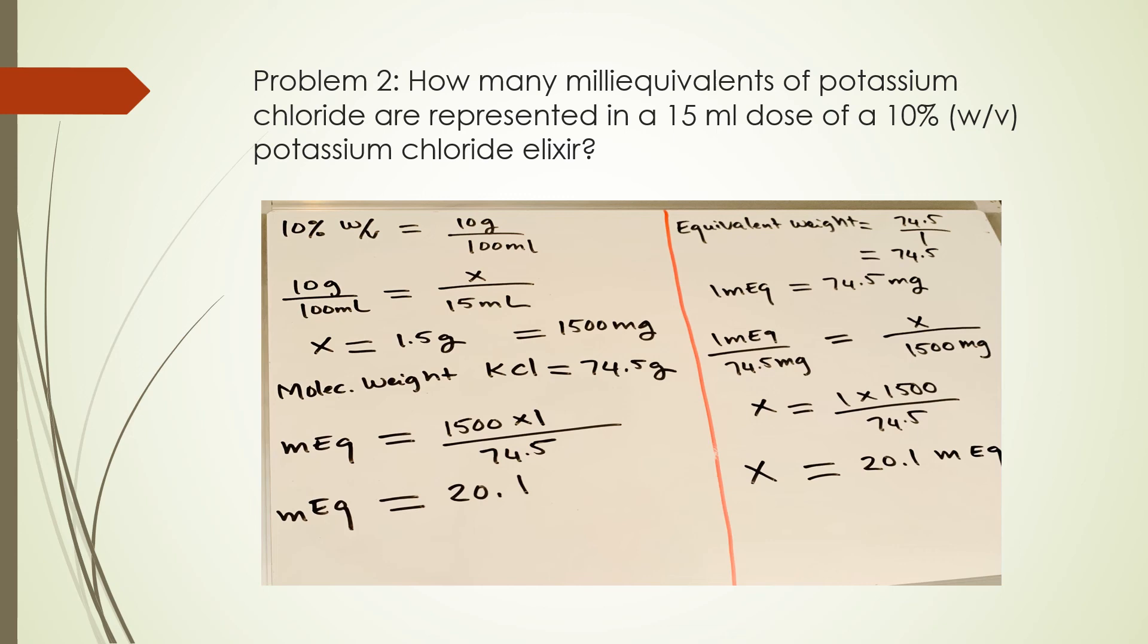You can also use the alternative method, finding the milliequivalent weight, which will be 74.5 divided by the valence, which is 1. So then your milliequivalent weight will be 74.5. That means 1 mEq equals 74.5 milligrams.